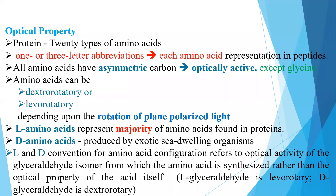Amino acids can be divided into two groups — dextrorotatory or levorotatory — depending upon the rotation of plane-polarized light. L amino acids represent the majority of amino acids found in proteins, that is levorotatory amino acids, whereas dextrorotatory amino acids are produced by exotic sea-dwelling organisms only. The levo and dextro convention for amino acid configuration refers to the optical activity of the glyceraldehyde isomer from which the amino acid is synthesized. L-glyceraldehyde is levorotatory and D-glyceraldehyde is dextrorotatory.